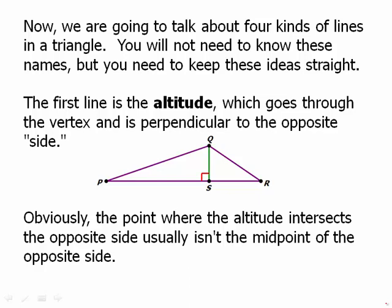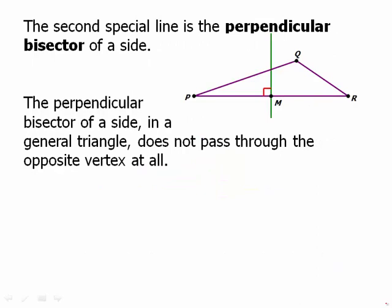Obviously, the point where the altitude intersects the opposite side usually isn't the midpoint of that side — S is not even close to being the midpoint of PR. The second special line is the perpendicular bisector of a side: it goes to the midpoint and is perpendicular there, but in general it does not pass through the opposite vertex at all. That green line isn't even pretending to pass through Q — it just goes right by without passing through it.